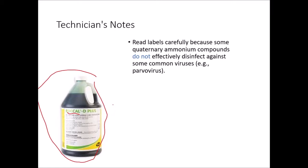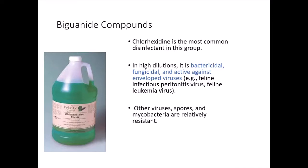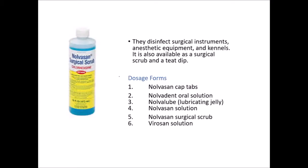Biguanide compounds — chlorhexidine is the most common, also known as Nolvasan. At high dilutions it is bactericidal and fungicidal, and active against enveloped viruses like feline infectious peritonitis virus and feline leukemia virus. Other viruses, spores, and mycobacteria are relatively resistant. It is widely used in surgery as a surgical scrub and is also available as solutions safer for antiseptics on live tissue. Uses include disinfection of surgical instruments, anesthetic equipment, and kennels. Available forms include tablets, oral solution, lubricating jelly, regular solution, surgical scrub, and virucidal solution.